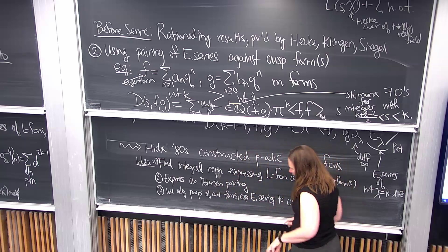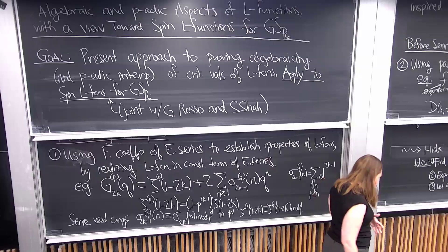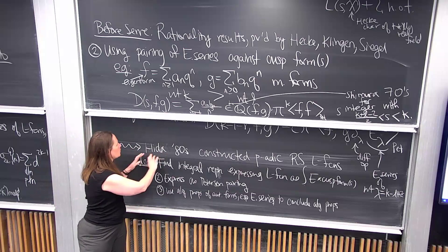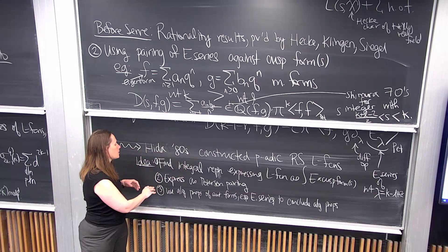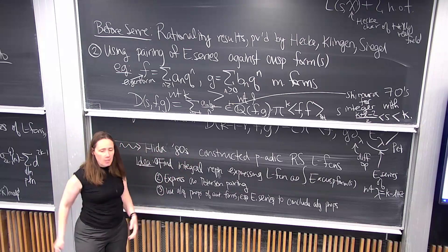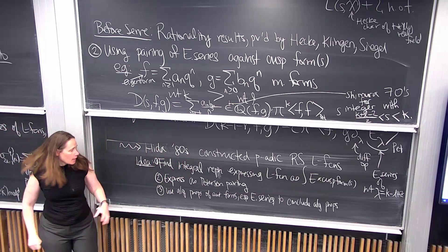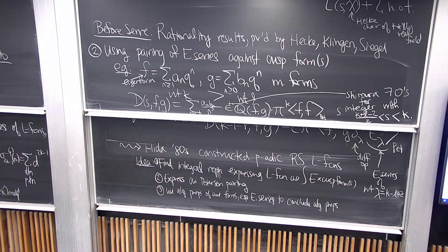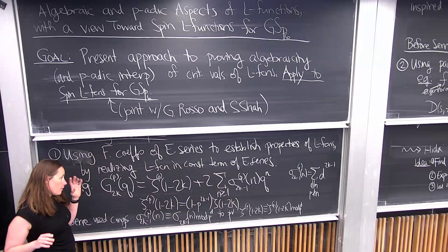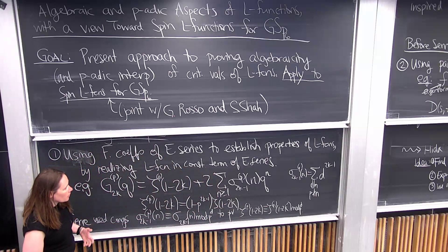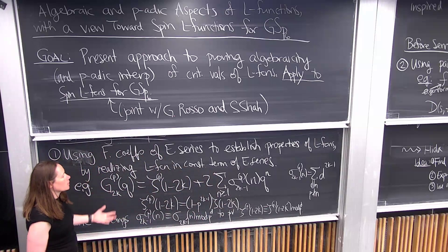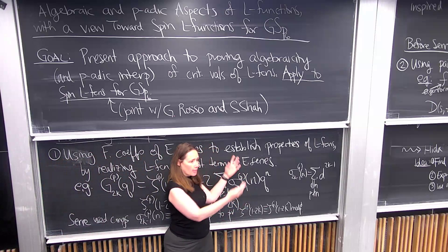Instead of proving algebraicity of the Eisenstein series, you need to see that the coefficients p-adically interpolate, so that you're back in the land where Serre was. In general, this requires a lot of work. In most higher rank cases, you have to construct the Eisenstein series, show it makes nice choices, show that the coefficients actually have a nice form and that they p-adically interpolate.